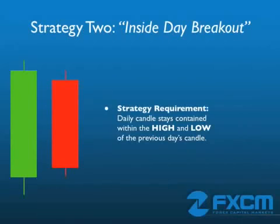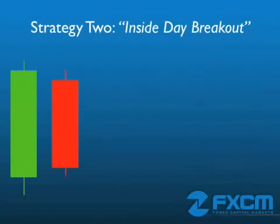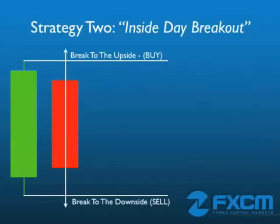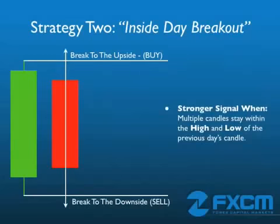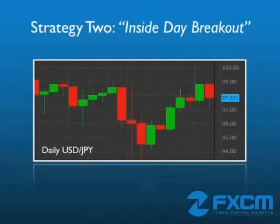Our next strategy is the inside day breakout play. We're going to look for a particular candlestick pattern — we want to locate a daily candle whose high and low price are contained within the high and low of the previous day's candle. You can see that the high and low of this candle never goes beyond the high and low of the candle which directly precedes it. When this candlestick pattern emerges, traders will look to buy 1 pip above the high or sell 1 pip below the low, in expectation that the price will break out. The strategy becomes even more reliable when you have two or more consecutive candlesticks that establish this condition.